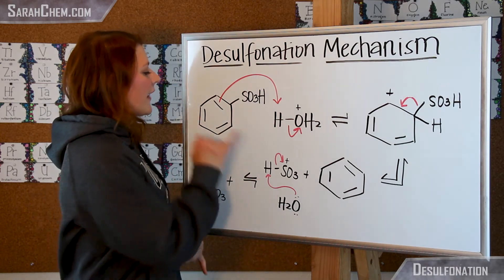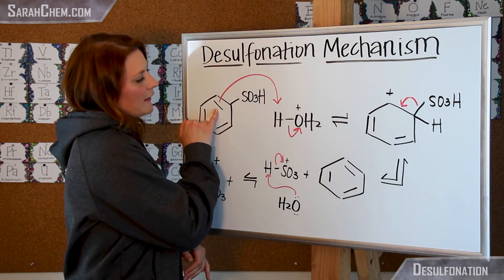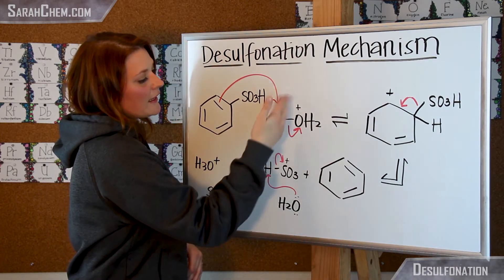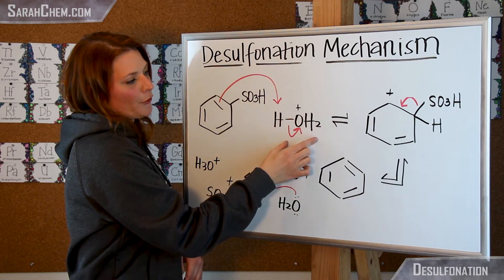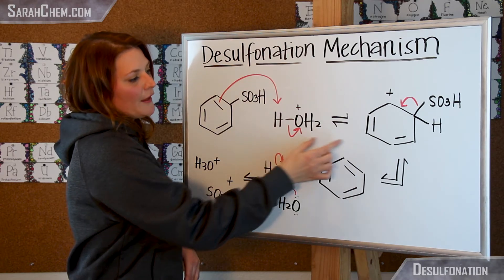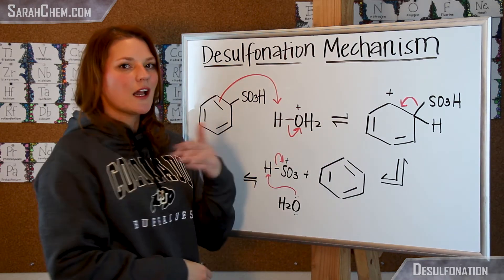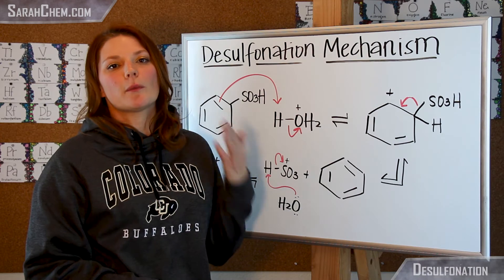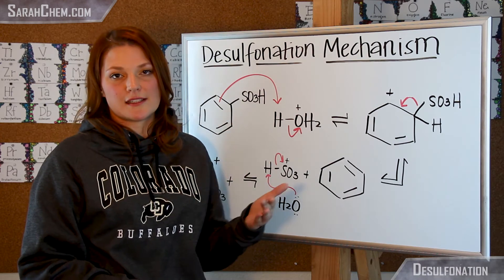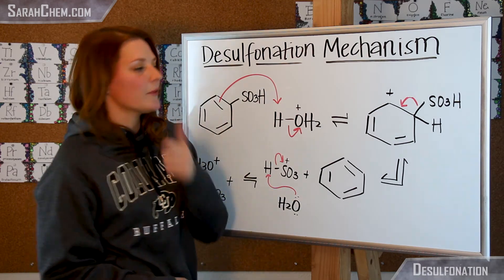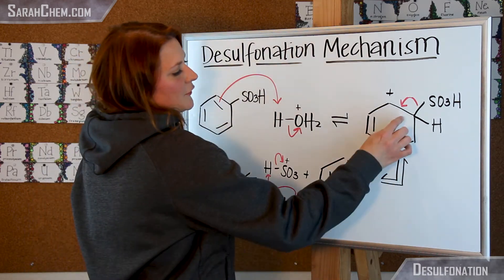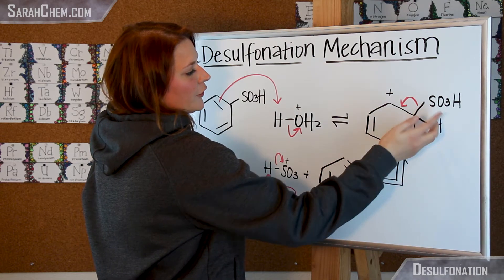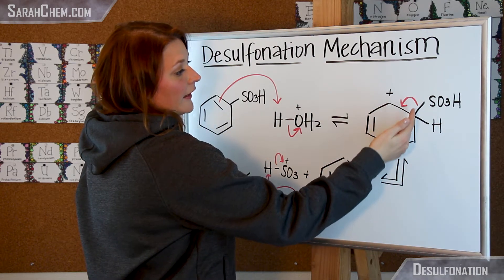So what can happen then is that these pi cloud electrons here are able to come and attack this hydrogen, kicking that water group off. You'll see that this is reversible because it's not a completely favorable step in that you are breaking aromaticity. So one way to re-establish aromaticity is for this bond right here, bonding this carbon and that sulfur, to break.